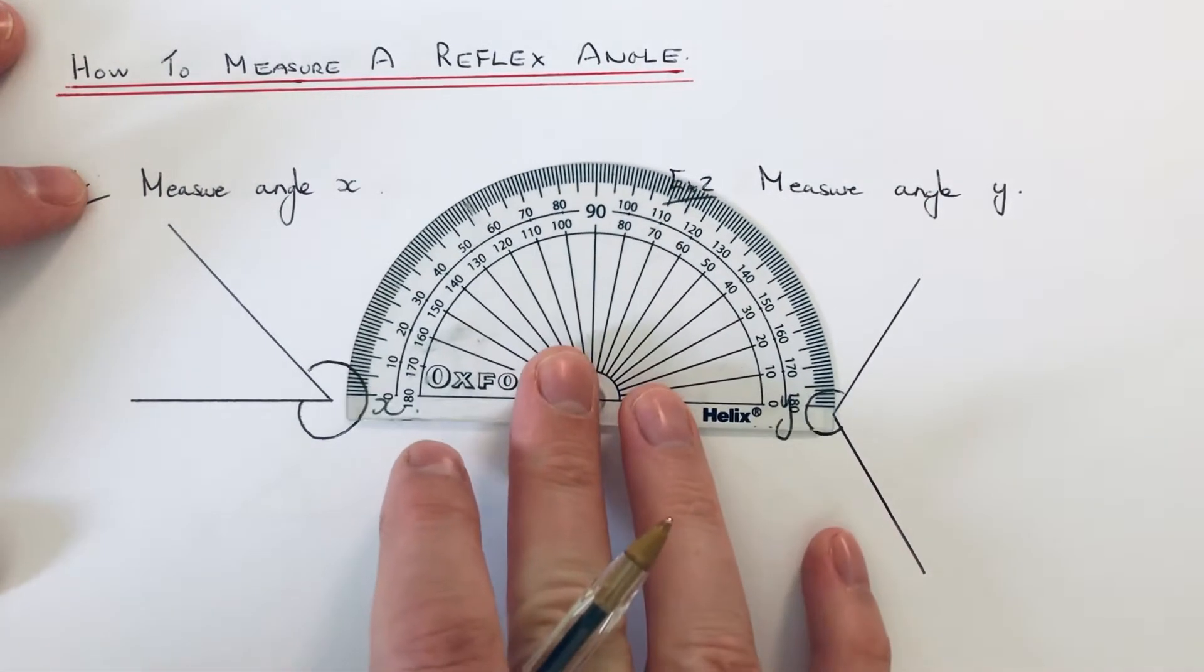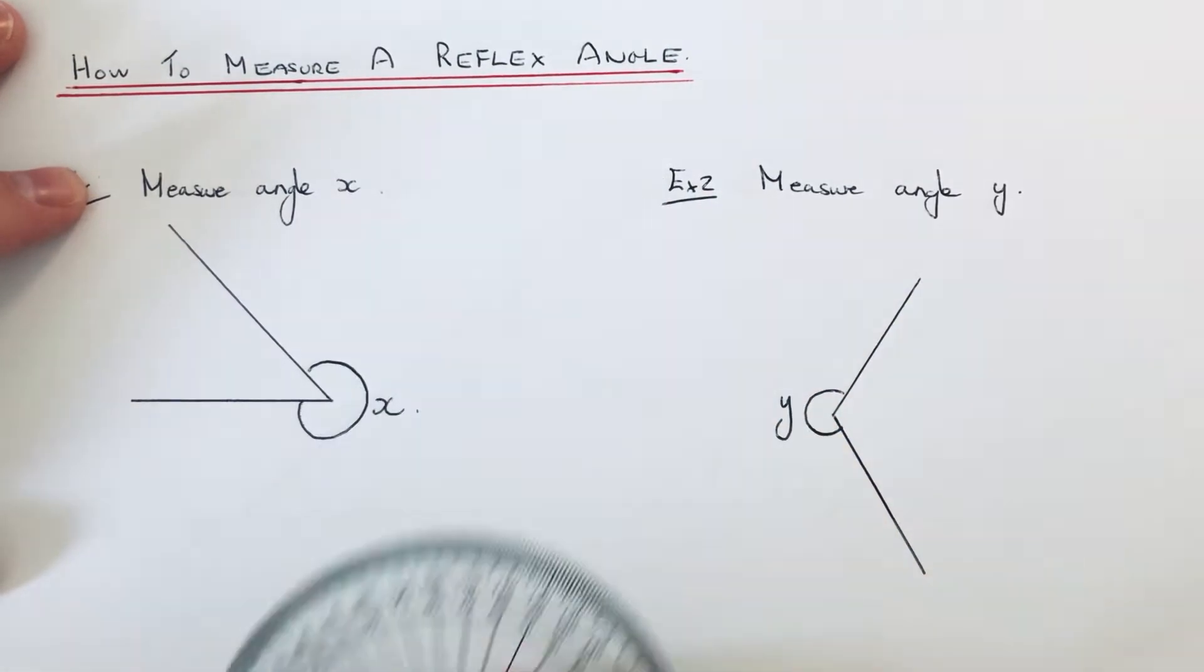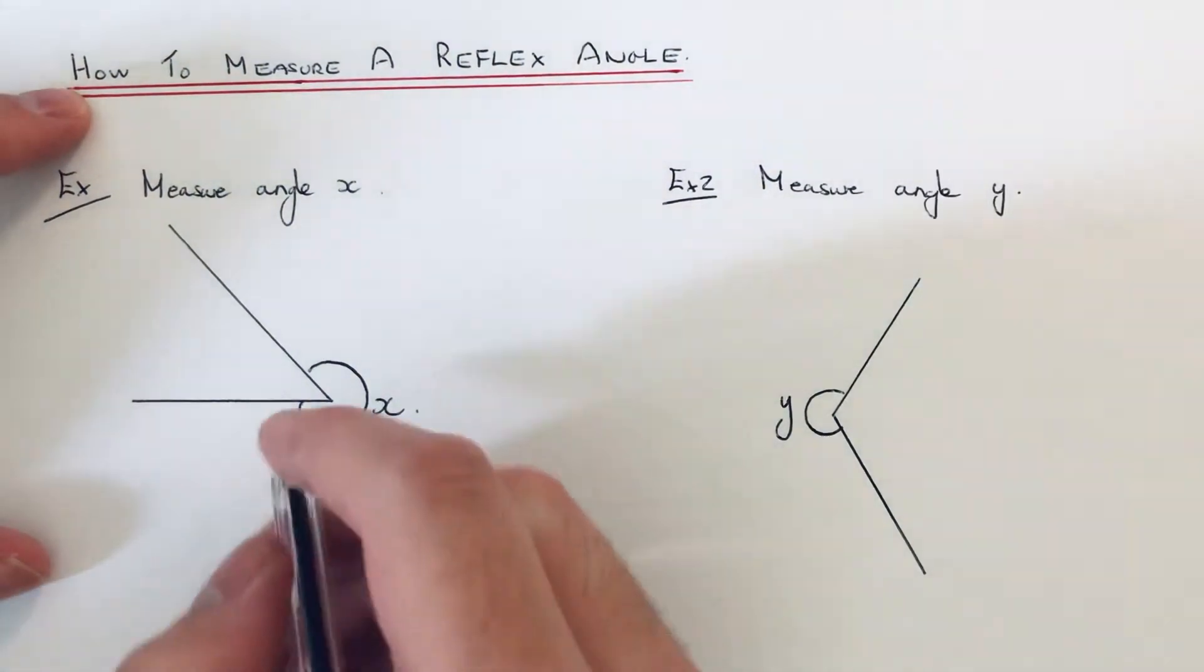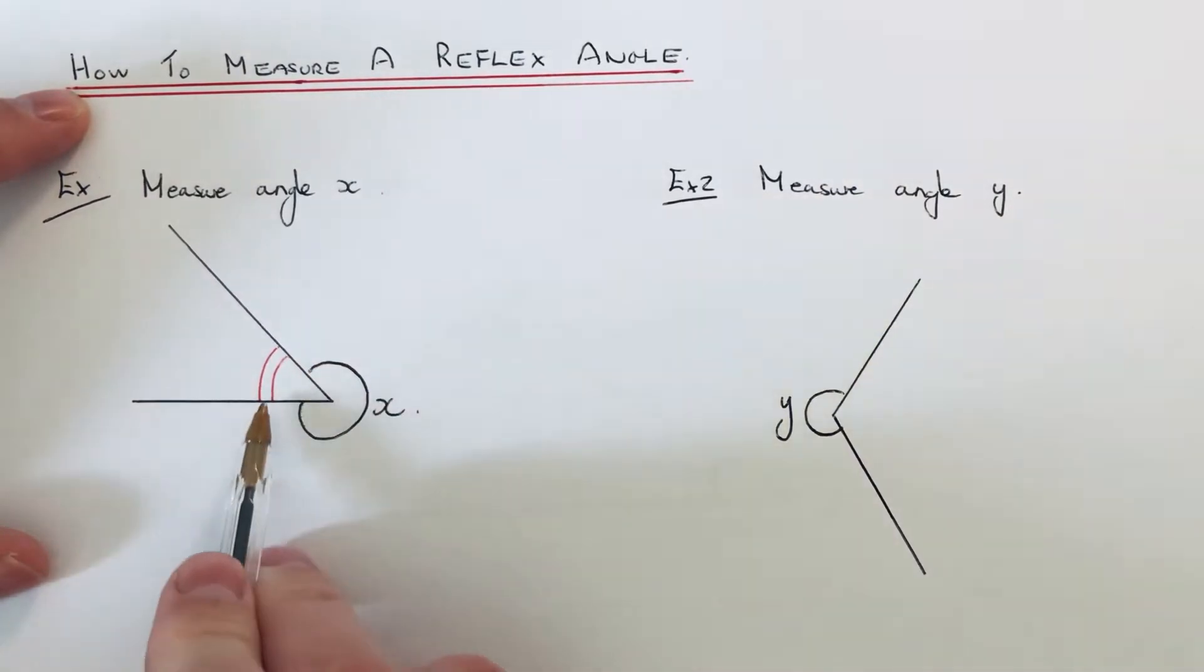to measure it fully on a protractor because it just goes around to 180 degrees, but you can actually do a little trick. The trick is to measure the other angle that you've got. So I'm going to measure this angle here and I'm going to take the answer away from 360 to give us the reflex angle because